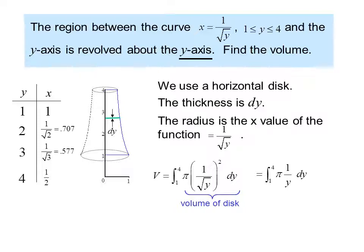Simplifying, we get the integral from 1 to 4 of pi times 1 over y, dy. Taking the antiderivative, we have pi ln y evaluated from 1 to 4, or pi times ln 4 minus ln 1. ln 1 is 0, and pi times ln 4 becomes pi times ln 2 squared. We can bring the exponent out front, and we get our simplified answer, 2 pi ln 2.